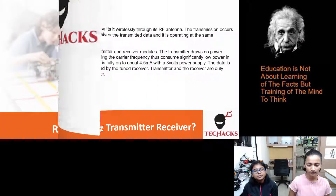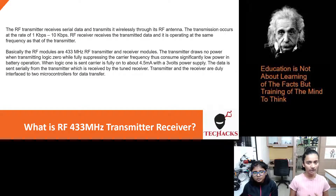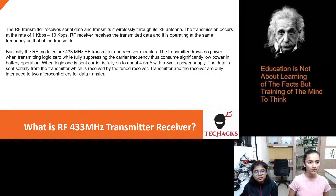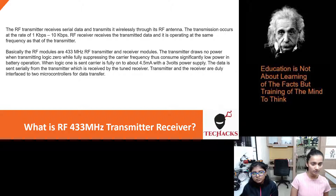So what are these? The radio frequency transmitter receives serial data and transmits it wirelessly through its RF antenna. The transmission occurs at the rate of 1 kbps to 10 kbps. The RF receiver receives the transmitted data and it is operating at the same frequency as that of the transmitter.